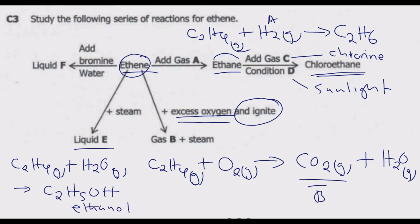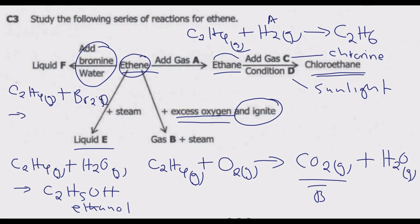For liquid F: we add bromine water to ethene and get liquid F. This process is known as bromination. Ethene (C₂H₄, gas) reacts with bromine (Br₂) to form the product. Bromine attaches at both carbons of the double bond, giving us 1,2-dibromoethane as the liquid product.